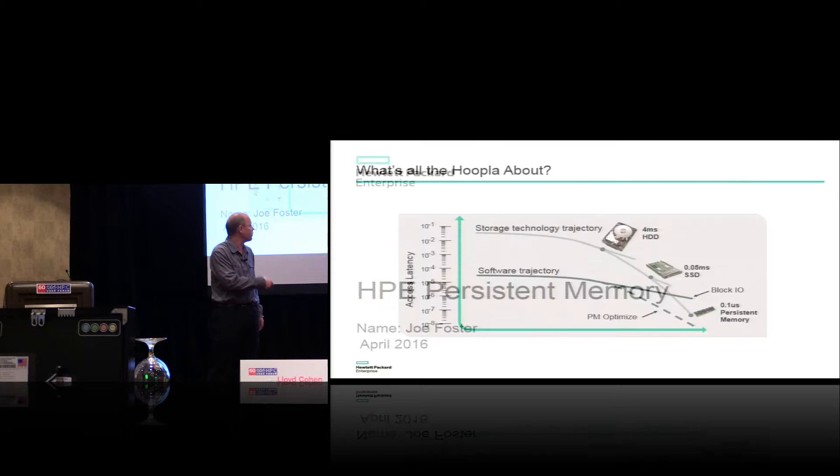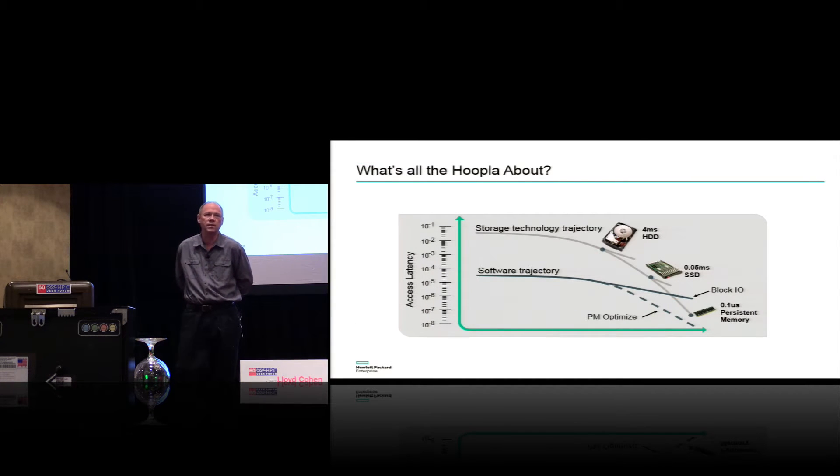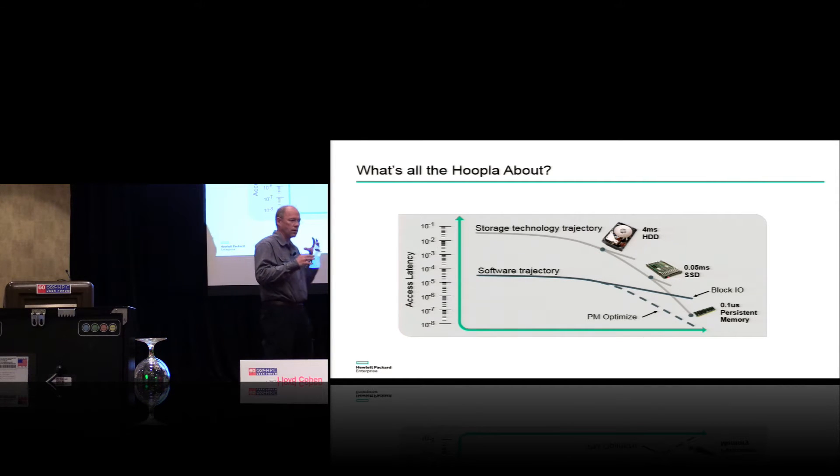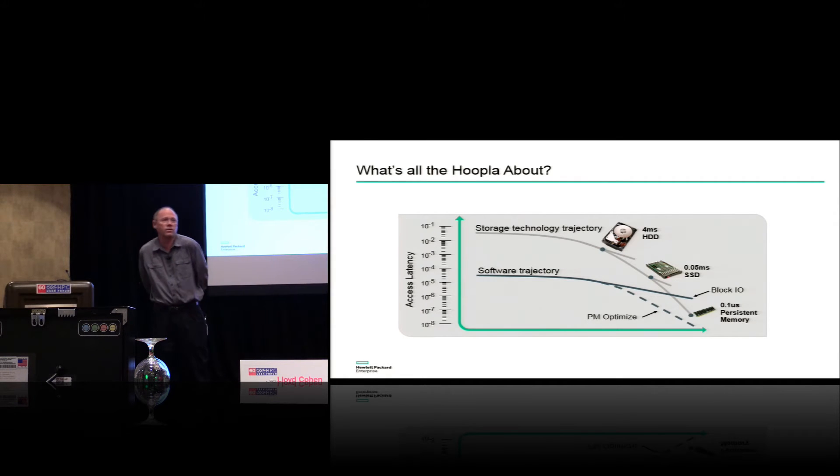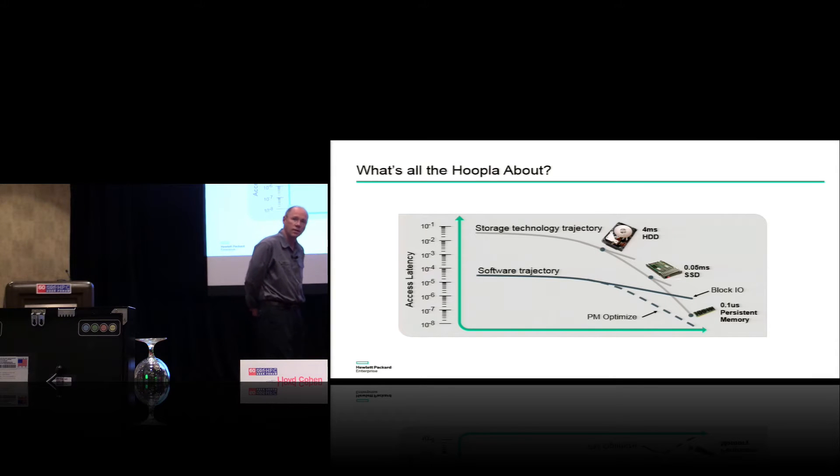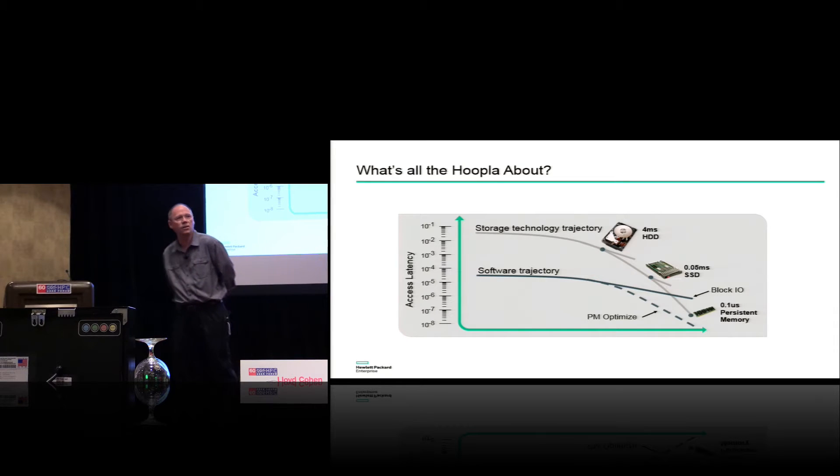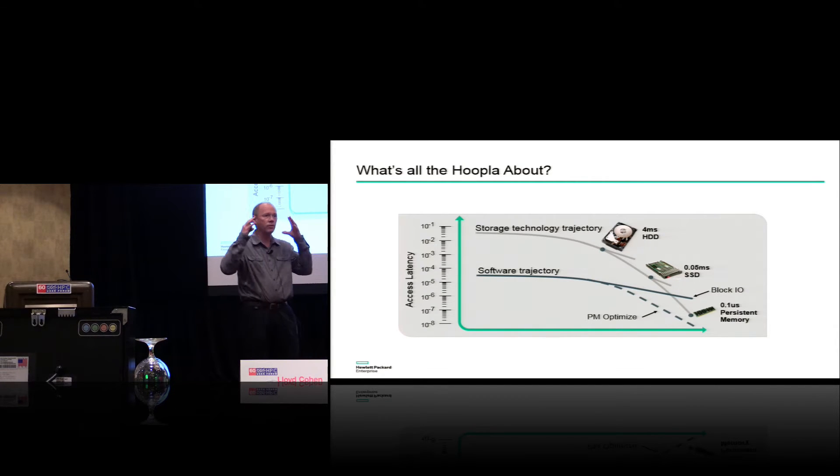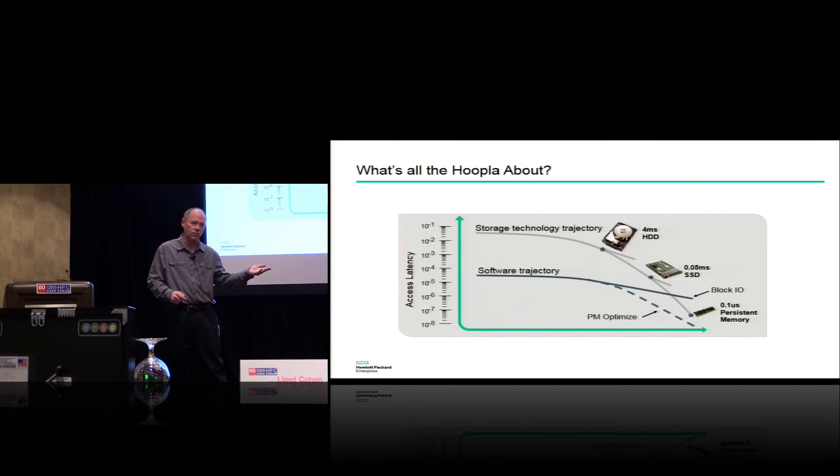Persistent memory is a very overloaded term. Within HPE, we've made the decision that to be a product or offering under the persistent memory umbrella, you have to have three characteristics. First, the obvious one is you have to remain state or maintain state at the loss of power. Second, it has to be directly accessible by the CPU. And third, it has to be byte addressable. Certain products clearly don't fit in that umbrella, like an SSD or a hard drive, because those don't meet those requirements.